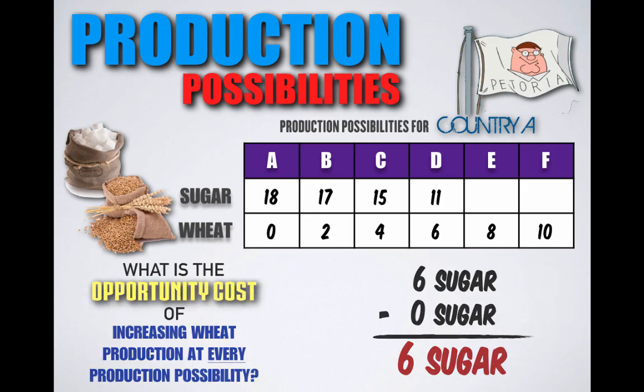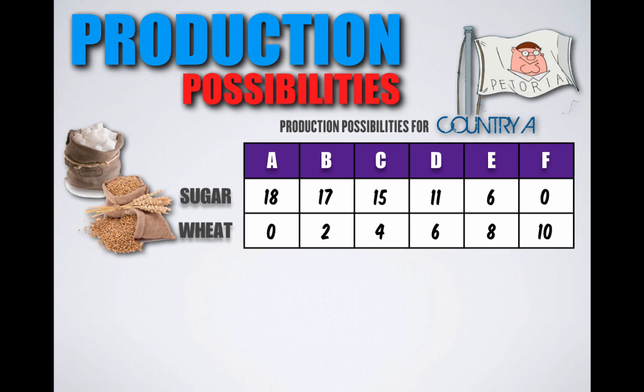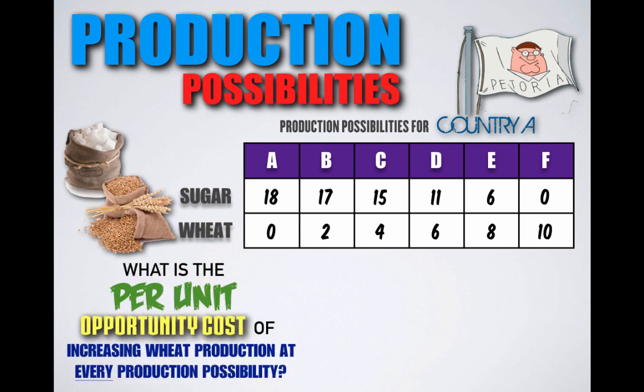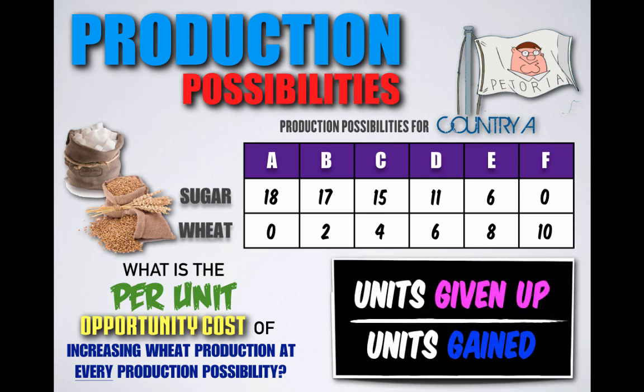Remember that economics uses marginal analysis, so it's important for us to find the marginal cost and marginal benefit of shifting from one production possibility to another. And so we must also find the per unit opportunity cost of increasing wheat production at every production possibility. In order to find the per unit opportunity cost of production, we have to take the units given up and divide it by the units gained.